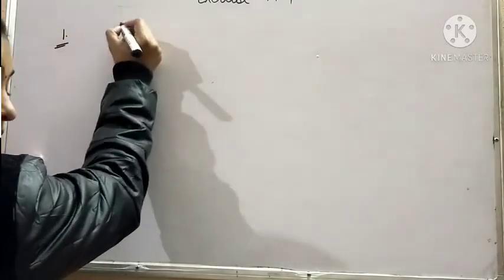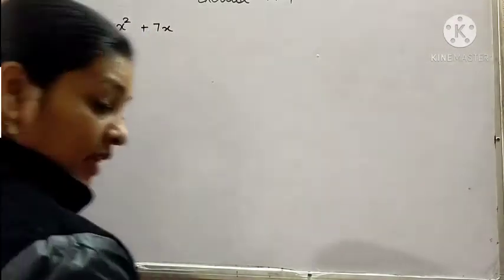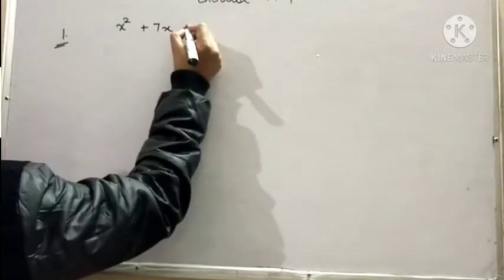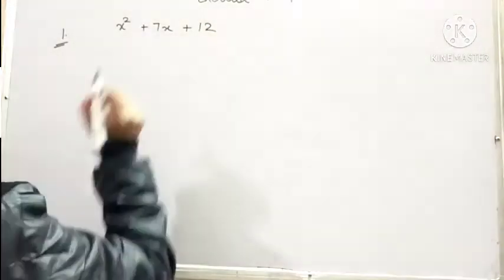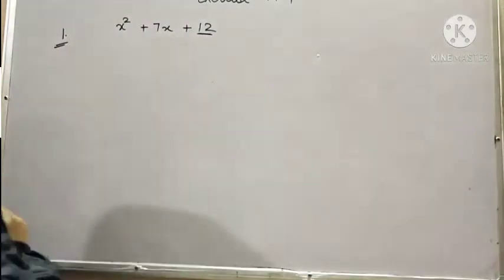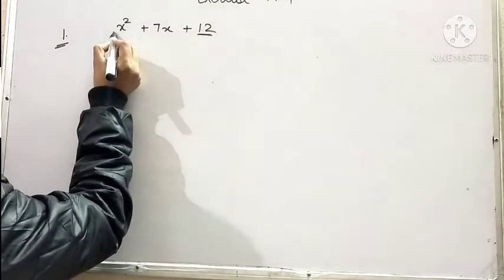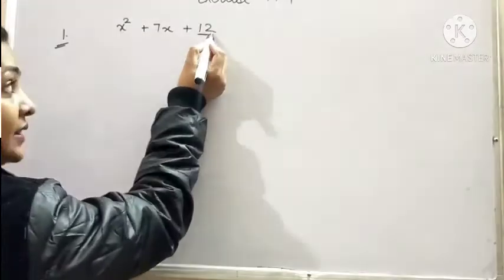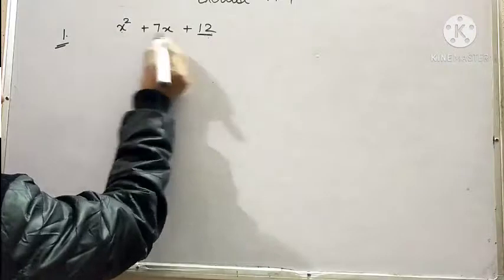In the very first question, it is given x square plus 7x plus 12. Now, let us see how to solve this problem. See, here this constant is 12. Whatsoever is the coefficient of x and this 12, they need to be multiplied.